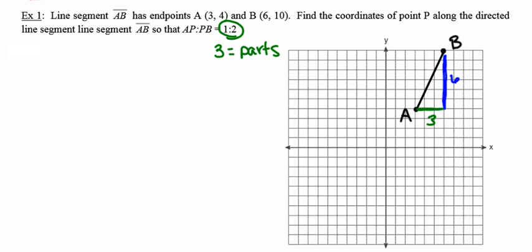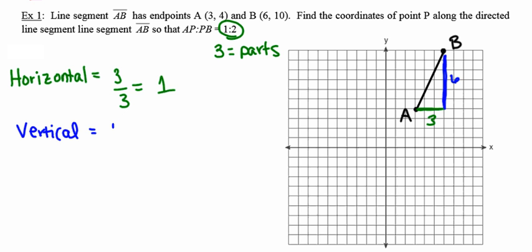I'm going to take the horizontal component — three units long — and divide it into three equal parts, giving one unit per piece. The vertical component is six units long, divided into three equal parts making each piece two units. So starting at point A, I move to the right one and up two, then right one and up two again, and right one and up two once more — ending exactly at B. I've divided that line segment into three equal parts.